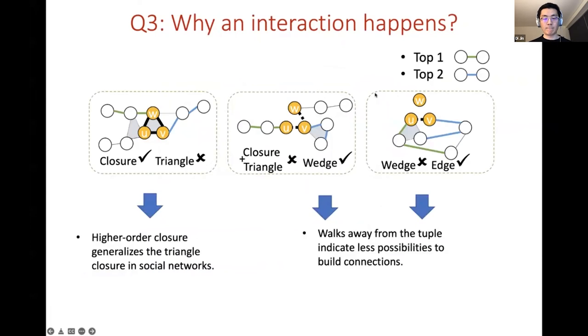Here we aim to find the most indicative walks for the model to make certain predictions. We show the top two walks that are most indicative to different patterns highlighted by the green walks and the blue walks here. This gives actually very interpretable results. For example, we find that if there are some walks that jump from node w and land on some nodes that are very close to node u and v, the closure among the three nodes is more likely to happen. This phenomenon kind of generalizes the traditional triangle closure in a social network.